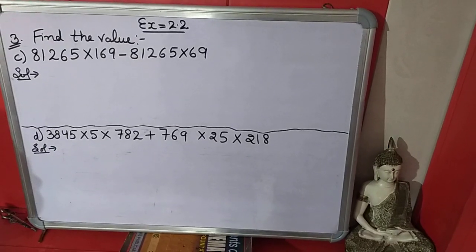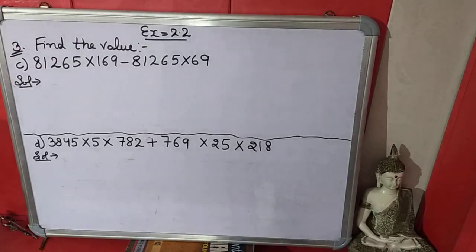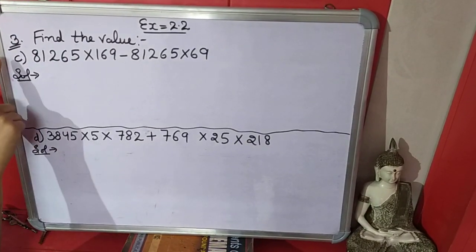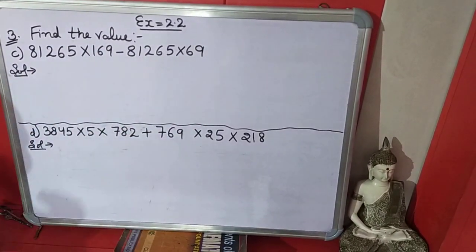Good morning students. In last module we did a part of third question. Now we will do C part and D part of the third question. This question is find the value. These numbers are same so we will use distributive property.